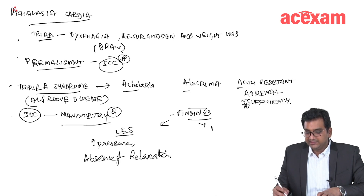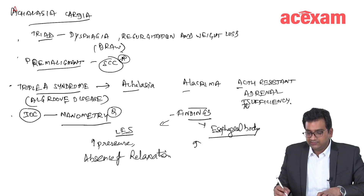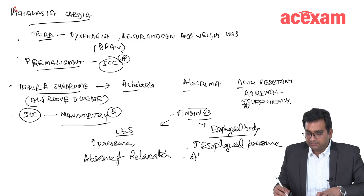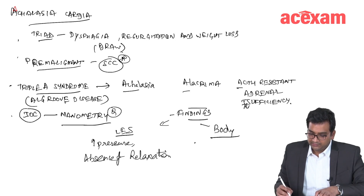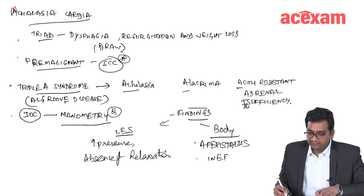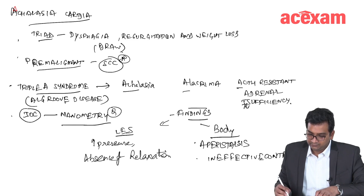In the esophageal body, manometry findings include increased esophageal pressure, aperistalsis, and ineffective contraction, along with increased pressure of the esophageal sphincter.